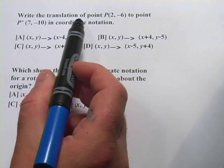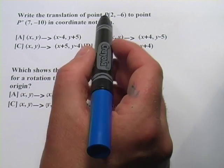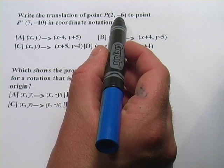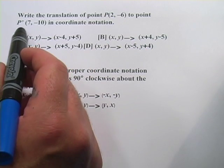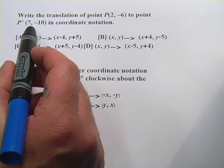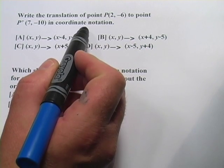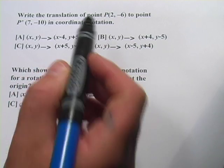It says: write the translation of point P (2, negative 6) to point P prime (7, negative 10) in coordinate notation.